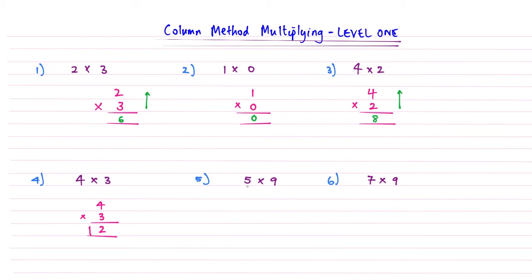5 times 9. Columns again. 5 times 9. Multiplication sign. Answer line. Select green. Happy days. 9 times 5. If you know from your 5 times table, it's 45. It's a two-digit number. So make sure that we just move into the tens column there.